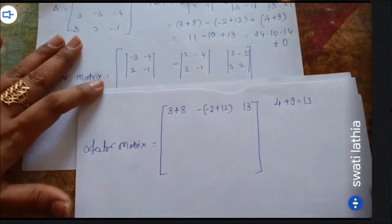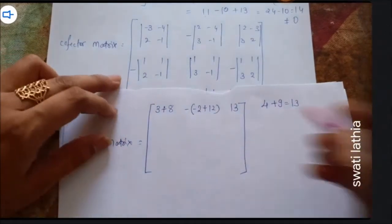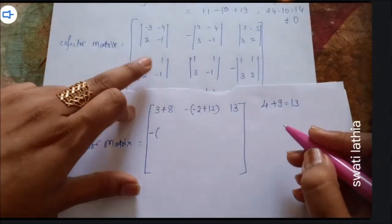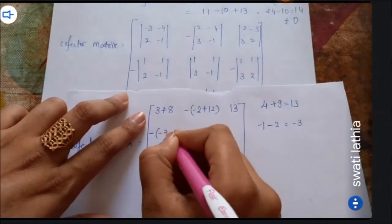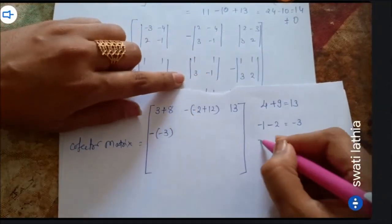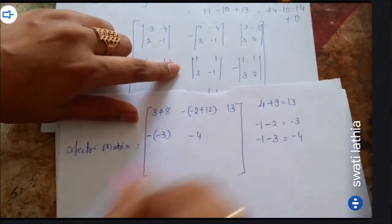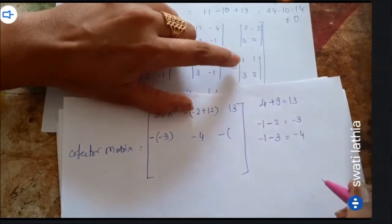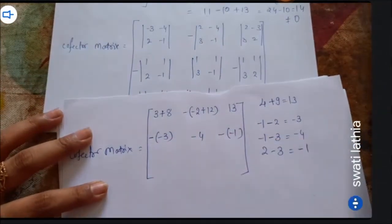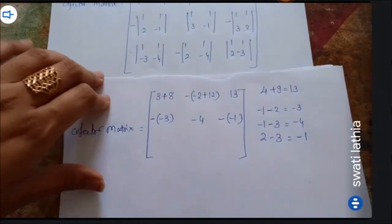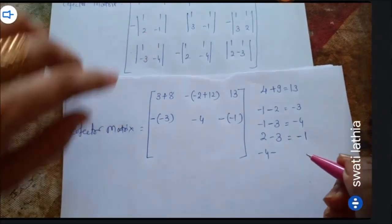Now second row cofactors: 1 into minus 1 minus 1, minus 2 into 1 gives minus 3, so we write minus 3. Next: 1 into minus 1 gives minus 1, minus 3 into 1 gives minus 3, so total minus 4, write minus 4. And: 1 into 2 is 2, minus 3 into 1 is 3, so that equals minus 1.